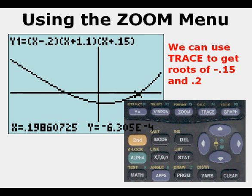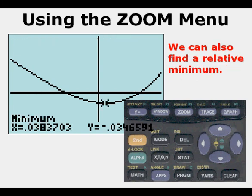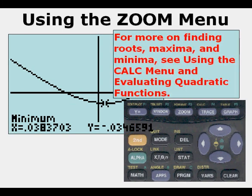And so we can use the trace and we found roots of negative 0.15 and 0.2. And we can also find the relative minimum here. So the zoom box feature is very valuable when we're looking in tight quarters and having trouble evaluating what's going on. And here we see a relative minimum. And for more on finding roots, maximum and minimum, you can see using the calc menu and evaluating quadratic functions.